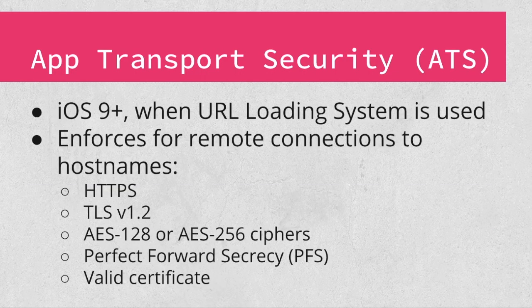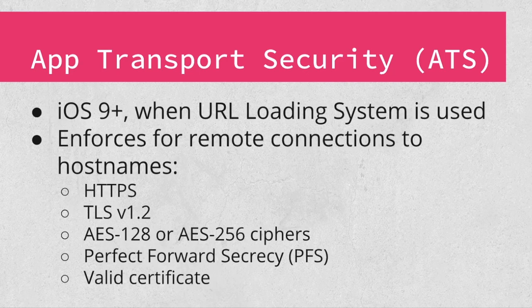Apple provides protection for an app's network connections through a feature called App Transport Security, or ATS. ATS was initially rolled out in iOS 9 and applies when the URL loading system is used, so it applies for higher-level classes like NSURLSession, but not lower-level interfaces like CFNetwork. ATS enforces a set of rules for connections to remote host names to ensure they meet minimum security requirements. The most obvious of these is the requirement that connections use HTTPS. By default, iOS apps are not allowed to make unencrypted HTTP connections to host names.